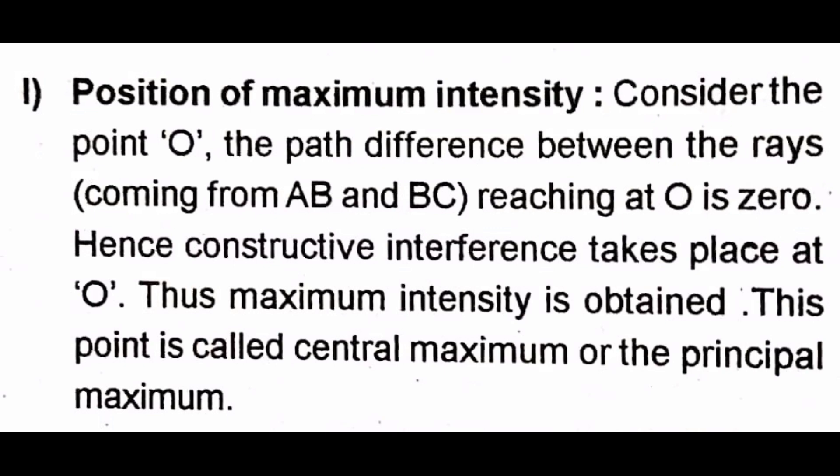Now we find the position of maximum intensity. According to Huygens' principle, each point on the wavefront acts as a source of secondary wavelets. At point O on the screen, the path difference between all rays from across the slit is zero, giving constructive interference — this is the central maximum (or principal maximum).